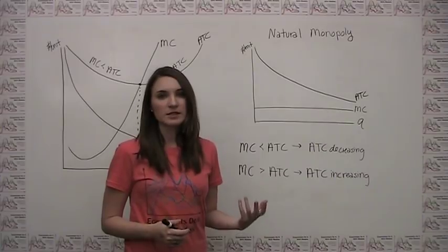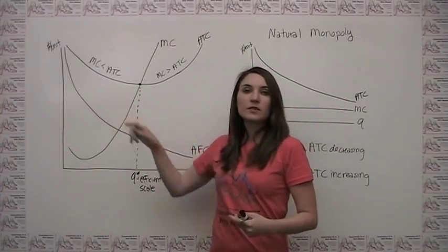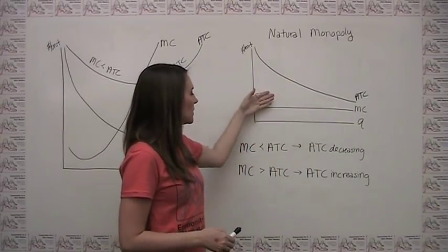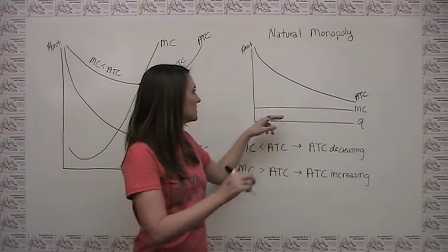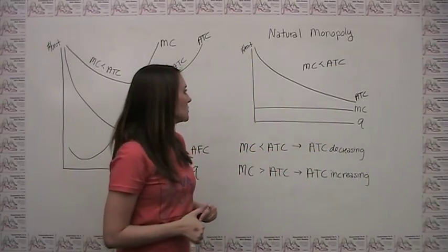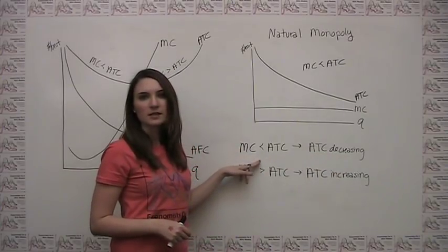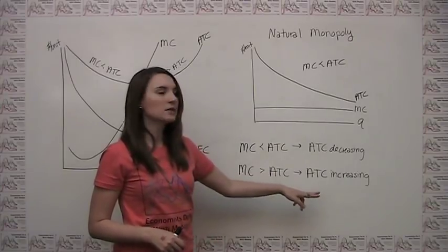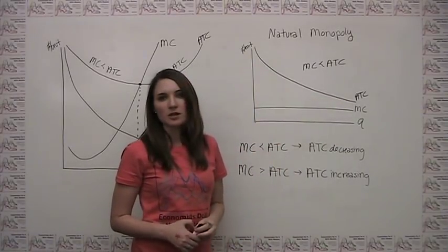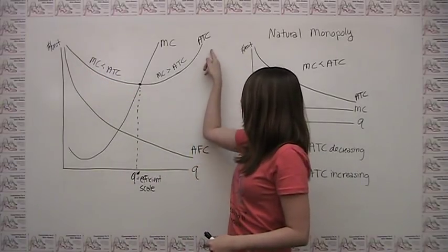Natural monopoly is a bit of an exception to this rule. If we were to look at average total cost for a natural monopoly, we don't get the typical U-shape. Instead, we get something that is continuously downward sloping. The reason is that for a natural monopoly, marginal cost is always less than average total cost. As long as this is always the case, average total cost is always decreasing and never flips to increasing — so we only get the left-hand side of the U, a continuously decreasing average cost. Natural monopolies are pretty rare, and in most cases you're going to see a normally-behaved U-shaped average total cost curve.